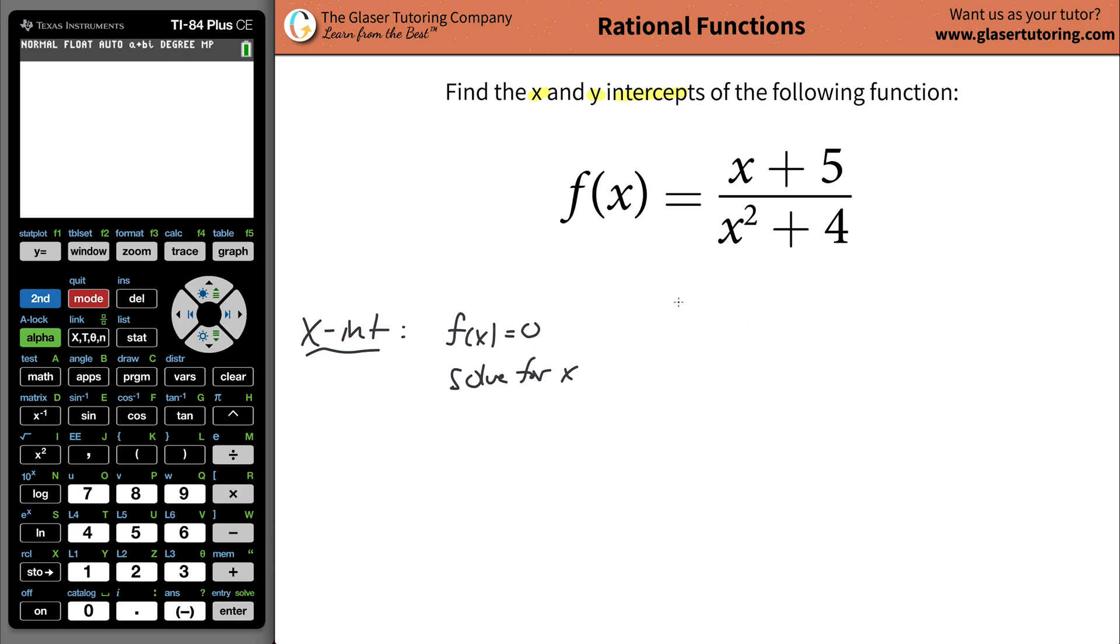Now, so what do we do? Take this function, instead of writing f of x, write 0 equals x plus 5, all over x squared plus 4, and solve this for x. So what you would do is I would want to get rid of this fraction, so I would cross multiply here, so it's going to be 0 times x squared plus 4 is equal to x plus 5.